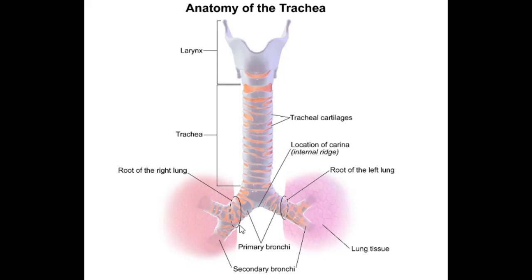The epithelium that lines the trachea and bronchi is pseudostratified columnar ciliated epithelium with goblet cells. The goblet cells produce mucus. This allows the trachea to perform a sweeping motion of the cilia to attract and trap inhaled particles and pathogens, moving them out of the airway — preventing them from lodging into your lungs.